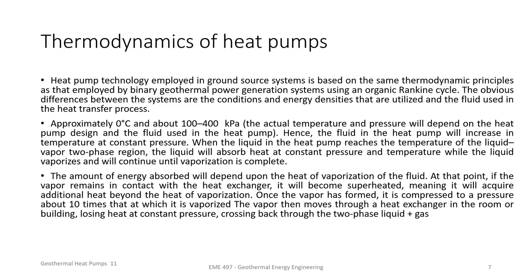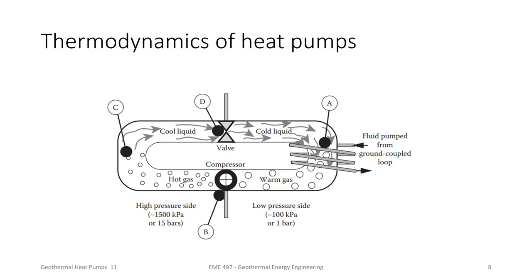Finally, the amount of energy absorbed will depend upon the heat of vaporization of the fluid. At this point, if the vapor remains in contact with the heat exchanger, it will become superheated, meaning it will acquire additional heat beyond the heat of vaporization. Once the vapor has been formed, it is compressed to a pressure about 10 times that at which it is vaporized. The vapor then moves through the heat exchanger in the room or building, losing heat at a constant pressure, crossing back through the two-phase liquid and gas.